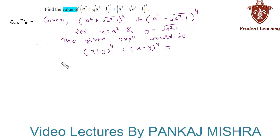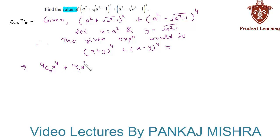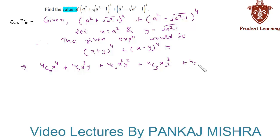Now we can expand it using the binomial theorem. The expansion of (x + y)⁴ is 4C0·x⁴ + 4C1·x³y + 4C2·x²y² + 4C3·xy³ + 4C4·y⁴.